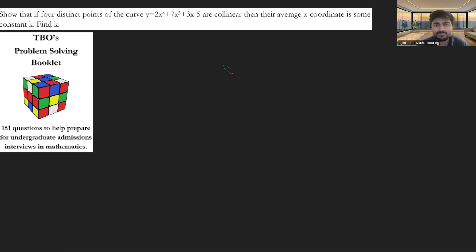We want to show that if four distinct points on the curve y equals 2x to the 4 plus 7x cubed plus 3x minus 5 are collinear, then the average x-coordinate is some constant k. We want to find the value of k.